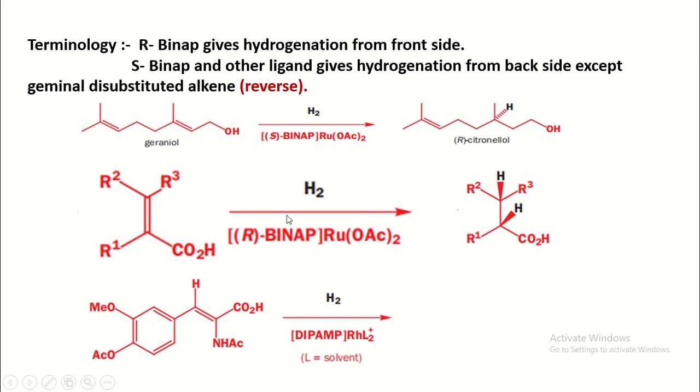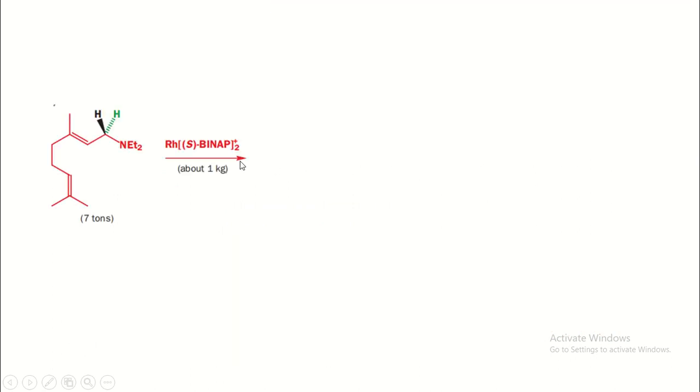Now in next reaction, the alkene reacts with hydrogen, hydrogen forms the diastereomeric complex with the catalyst, and then in presence of rhodium chiral catalyst, at that time hydrogenation takes place from the back side by using similar terminology.